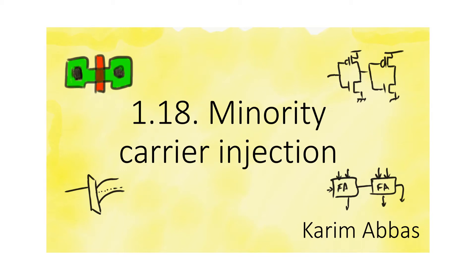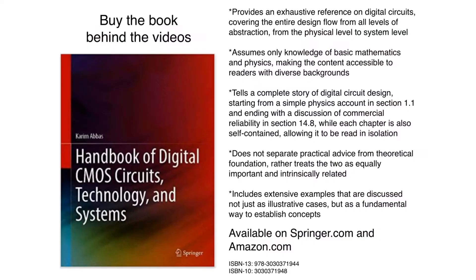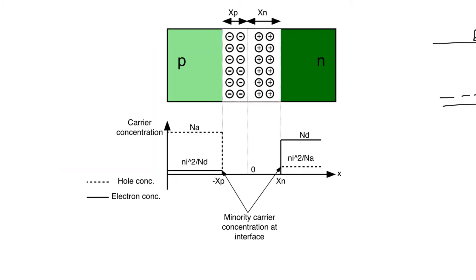The first step to understanding diode current is to understand what happens to minority carriers on either side of the interface when we apply an external voltage. The equilibrium levels of carriers can be calculated very easily. In the n-neutral zone, we know that n, the concentration of electrons, is equal to ND. And in the p-neutral zone, we know that p, the concentration of holes, is equal to NA. This holds when we assume full ionization.